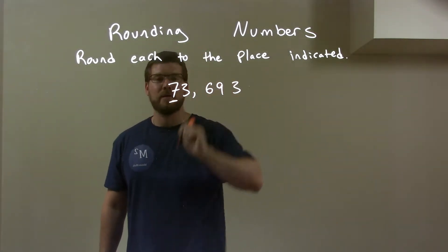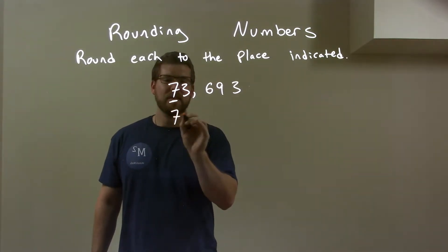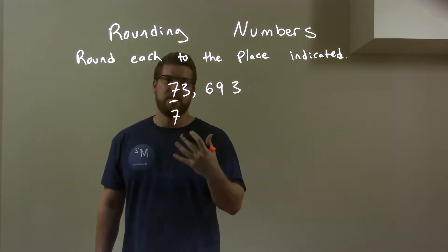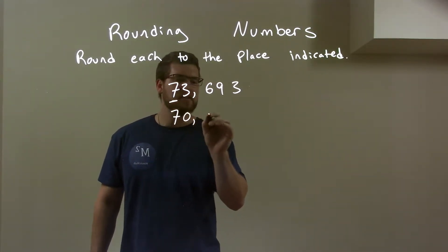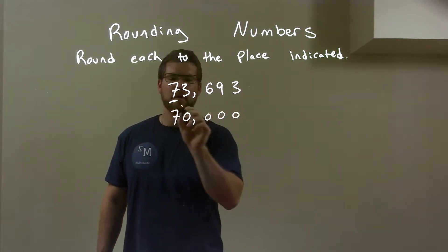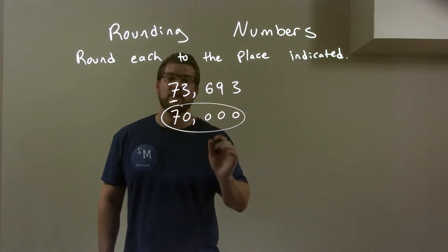That causes us to round down. So the 7 stays the same, it doesn't get added another number. And the rest are just zeros across the board and so our answer here is just 70,000.